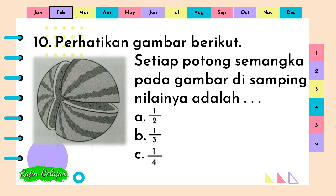Perhatikan gambar berikut. Setiap potong semangka pada gambar di samping nilainya adalah titik-titik-titik. A. Satu per dua. B. Satu per tiga. C. Satu per empat. Jawaban yang benar adalah B. Satu per tiga.